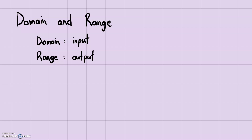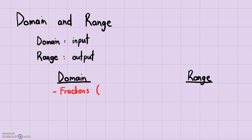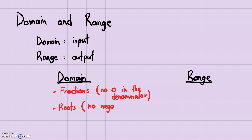There are some limiting factors to keep in mind for both domain and range. For domain, what should you look out for? First of all, there can't be a zero in the denominator, so you need to look out for fractions. Also, there can't be negative roots. So if any number you put into a function would make either of these true, that number would be outside the domain.